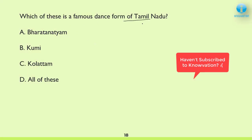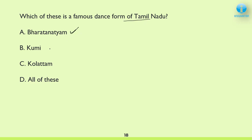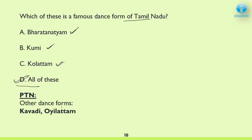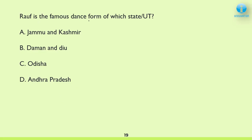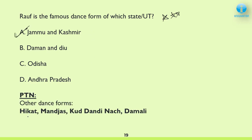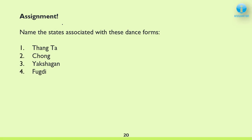Next: Which of these is the famous dance form of Tamil Nadu? Bharatnatyam — the most important classical dance form of Tamil Nadu — is correct, Kumi is also correct, and Kolaktam is also correct, so the answer is D — all of these. Two more important dance forms in Tamil Nadu: Kawadi and Oilaktam. Rauf is the famous dance form of Jammu and Kashmir — a very important, three-star question asked many times. Other dance forms of J&K: Hikat, Manjas, Kud, Dandi Naach, and Damali.